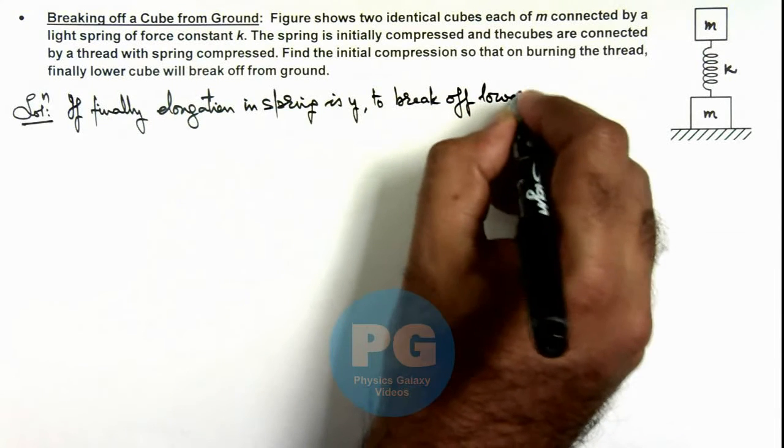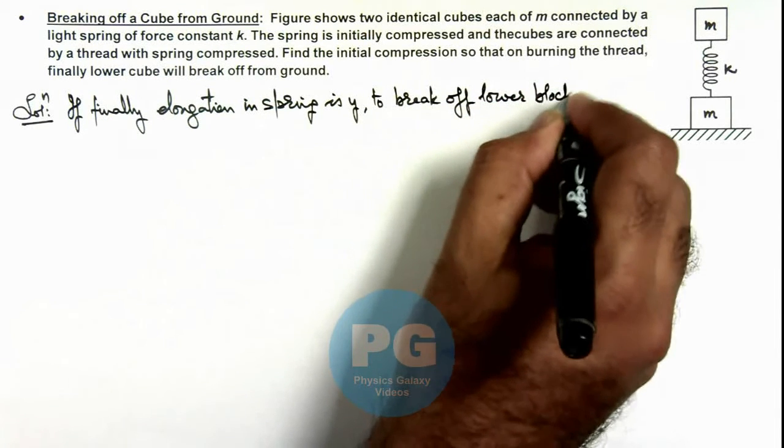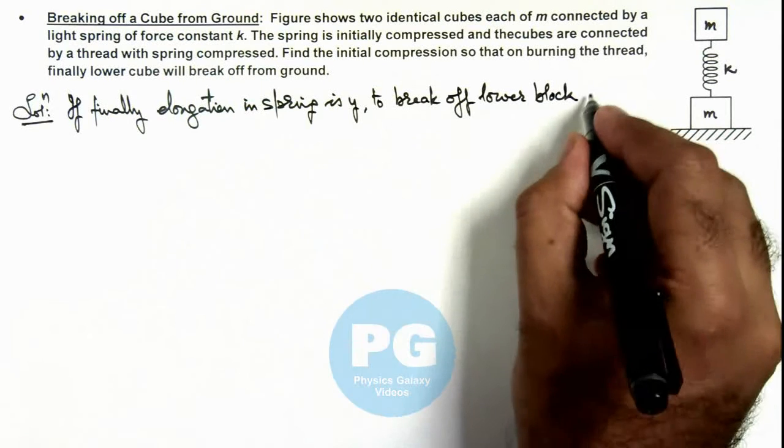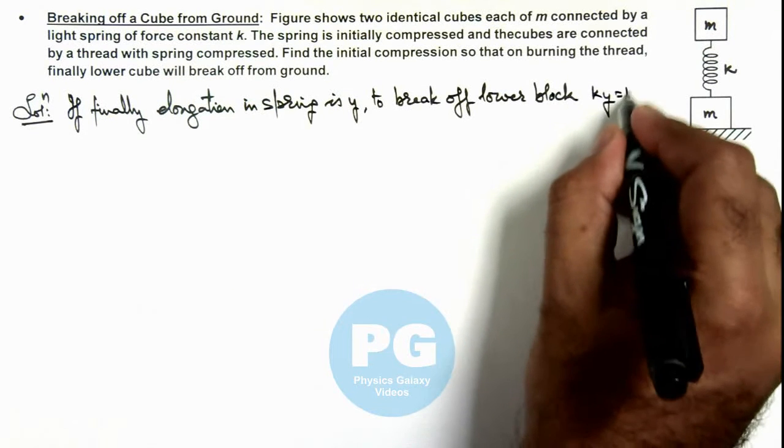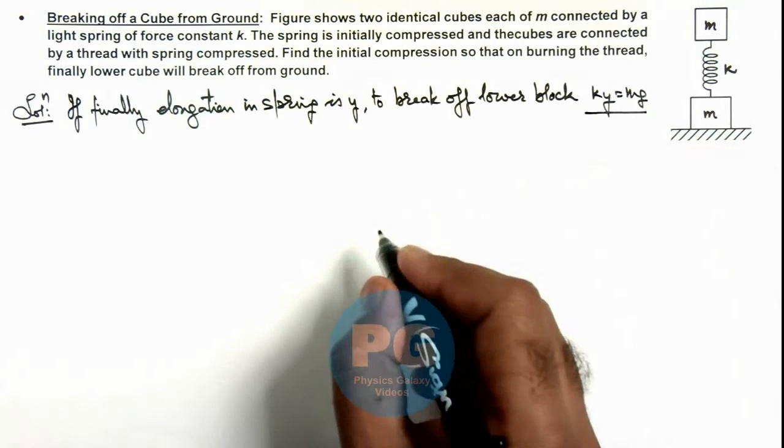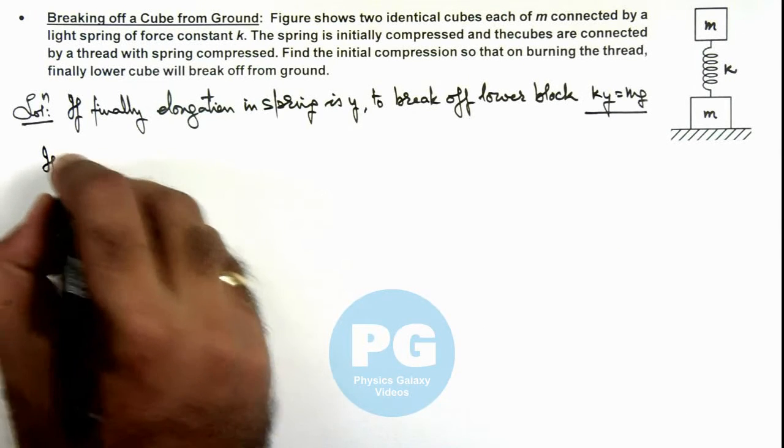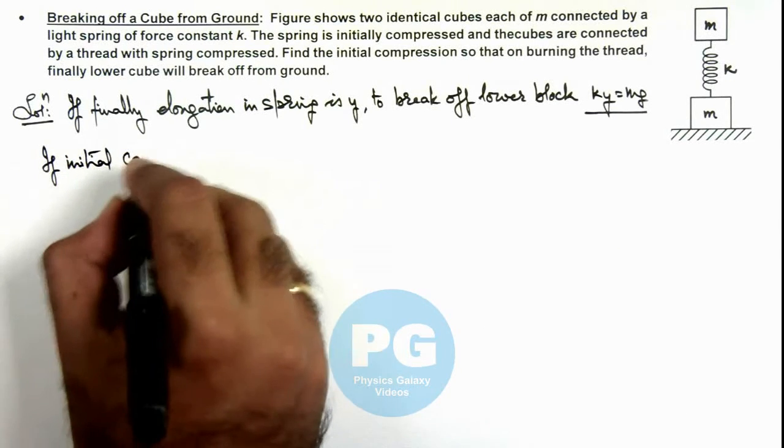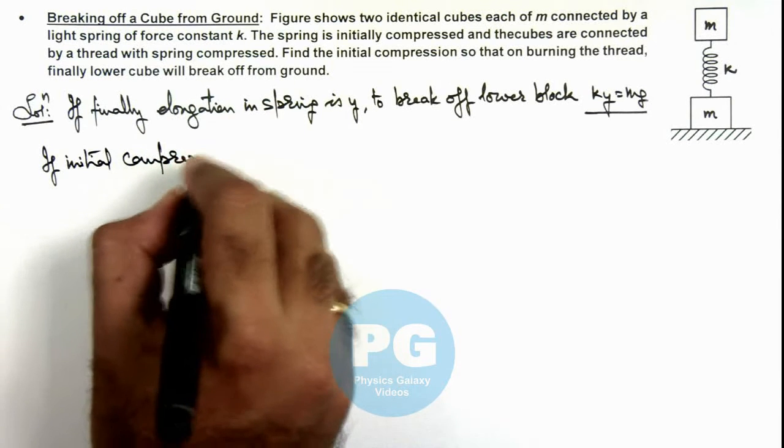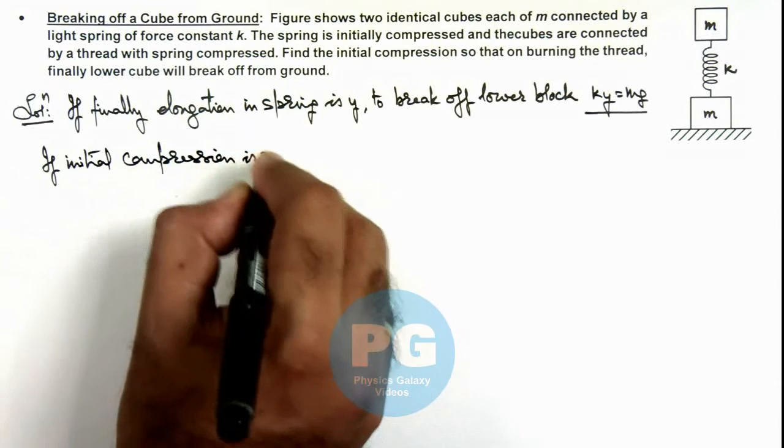Here we can directly use ky should be equal to mg. And we can say if initial compression is x.